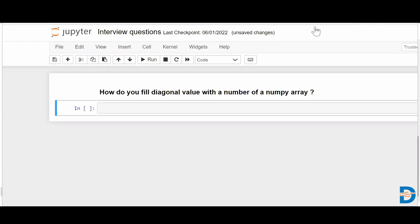You have a pre-constructed NumPy array and you need to replace the diagonal values of that NumPy array with a specified given number. So how do we do this? How do we replace any diagonal values of a NumPy array with a specified number? Let's see.